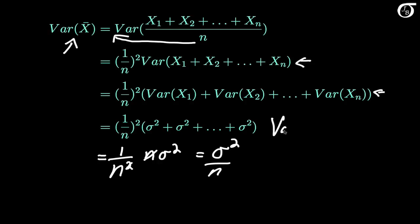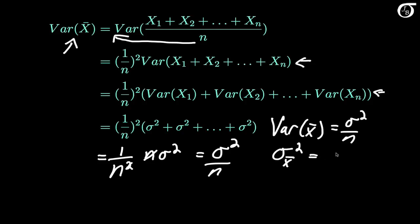So the variance of the sampling distribution of X-bar equals sigma squared over n. We often write that as sigma squared sub X-bar equals sigma squared over n. And if we want the standard deviation of the sampling distribution of X-bar, that's the square root of the variance, written as sigma sub X-bar, which equals sigma over the square root of n.